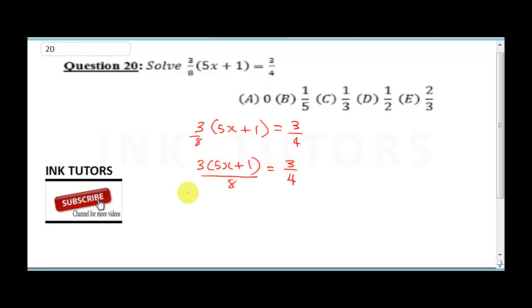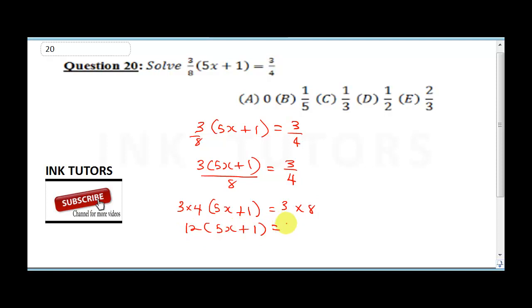We do cross multiplication: 3 times 4 times (5x + 1) equals 3 times 8. So 12(5x + 1) equals 24. Opening the bracket: 12 times 5 is 60x, and 12 times 1 is 12, giving us 60x + 12 equals 24.